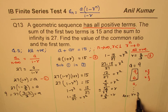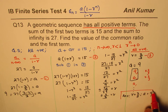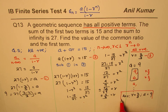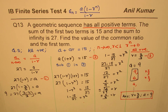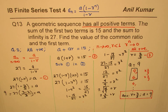So the answer is: common ratio r = 2/3 and first term a = 9. I hope that helps. It is a very important question from a test point of view. You should definitely go through this video once again. If you like, you can subscribe to my videos and share them with your friends. Thank you and all the best.